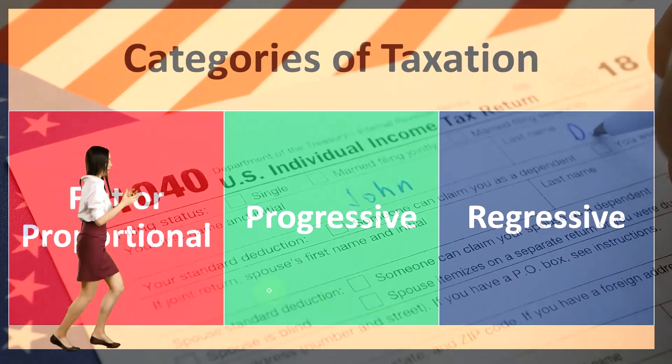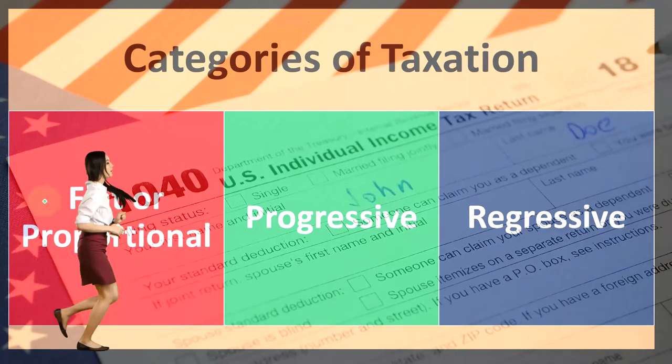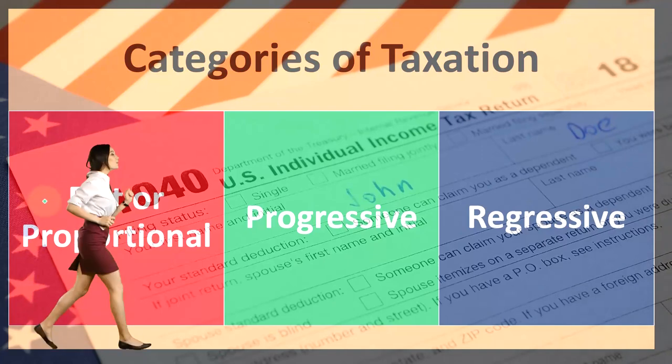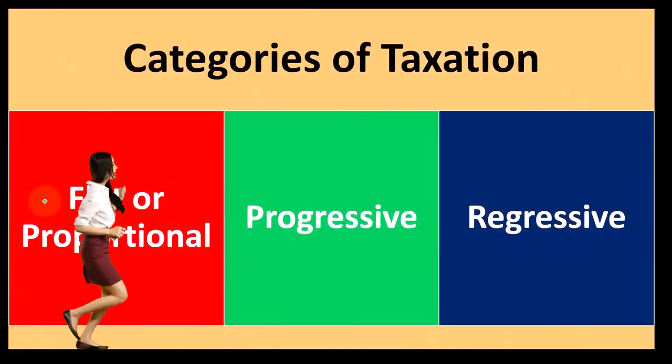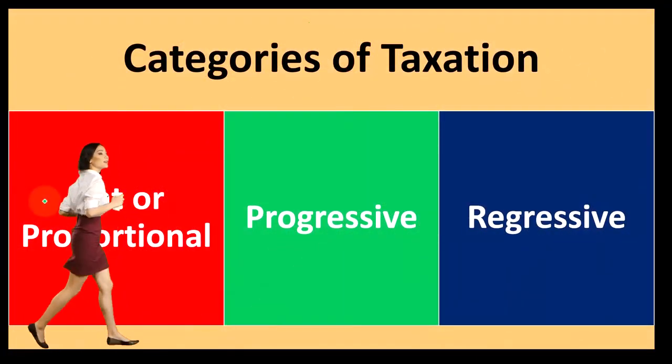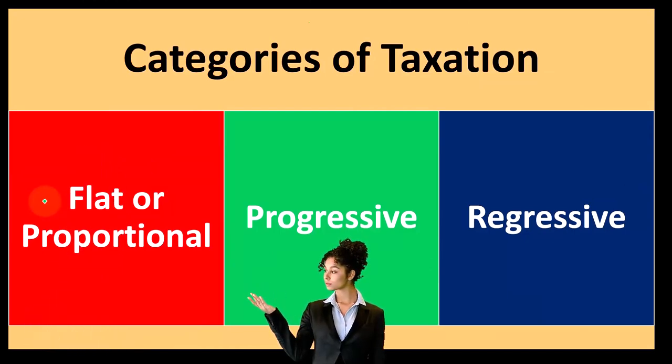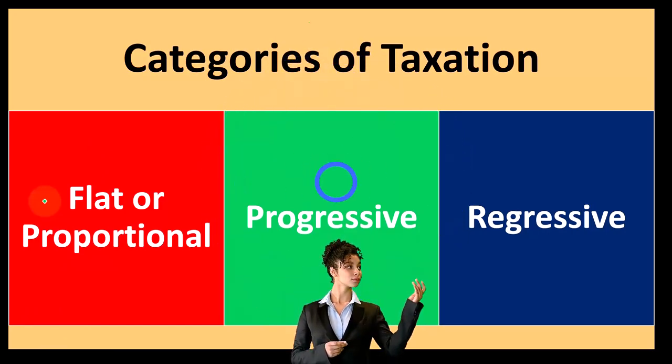So when you hear like a flat tax, people are often thinking that you have just one tax rate. Like you give 10% to charity, that's kind of like a flat tax if you were to apply that rule. If you're going to say 10% is coming out of your income, that's a flat tax.